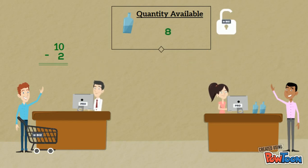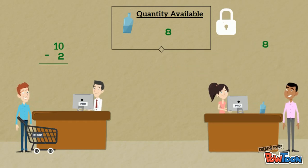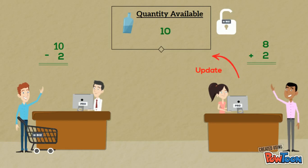The stock receiver can now access the field with the updated figure. He accesses the field. The field is now locked. He works on his transaction. When he is done, he updates the field and the field is unlocked. In this way, both updates are taken into account, and our lost update problem is solved.